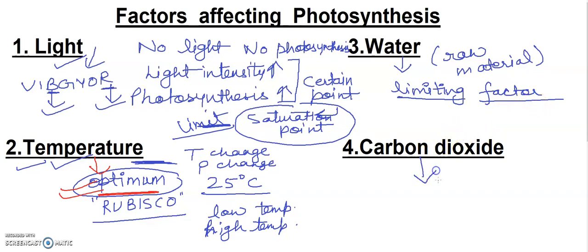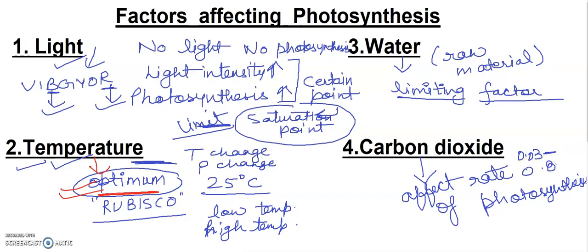CO2. CO2 in dark reaction, its requirement and availability affect rate of photosynthesis. This will also affect rate of photosynthesis. You know in atmosphere, 0.03 to 0.04% CO2 is present in atmosphere up to a certain point only.